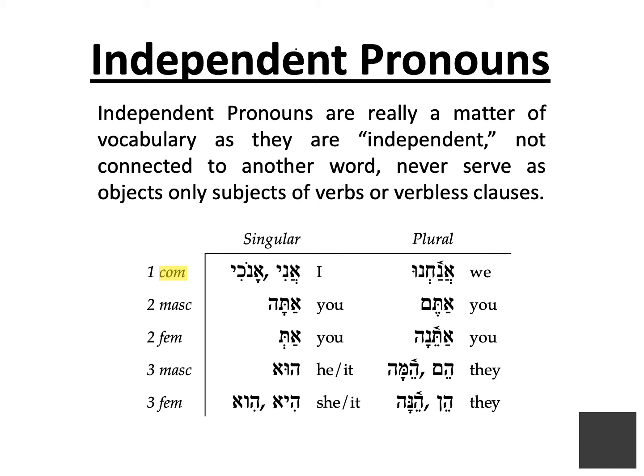You will also notice that the third person forms look very similar. A simple way to remember the singular forms is the saying: he is she, who is he. For the plural forms, you will notice that just as with the masculine plural ending of nouns, the masculine has a mem. Note this well because the pattern is true of nouns, pronouns, adjectives, and verbs. When you see a mem, the form is always masculine.